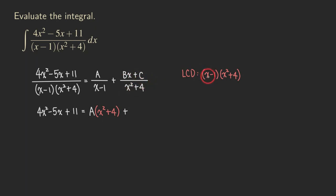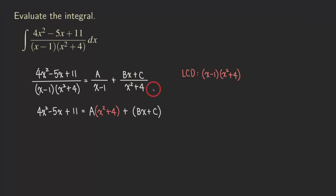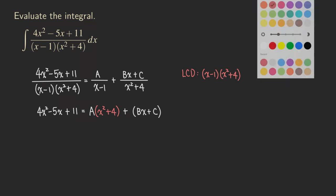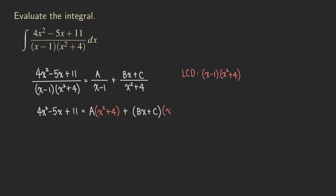Now, take the second fraction and multiply by this LCD. The x squared plus 4 will get canceled, and we are left with just the numerator and also this x minus 1. So we are getting parentheses Bx plus C times x minus 1. Don't forget the parentheses around the Bx plus C, because we are multiplying by the factor x minus 1 — we need to make sure we have parentheses for both binomials.